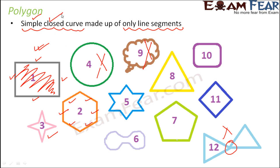Similarly, let's look at image number 5. Here you see 12 line segments forming this shape. It is a closed curve and also a simple curve, so this is a polygon. The rest of the images, I'll leave it up to you to decide which one is a polygon and which one is not.